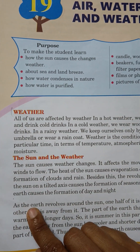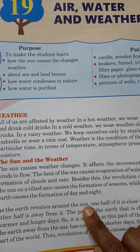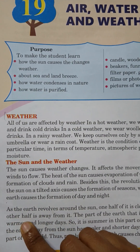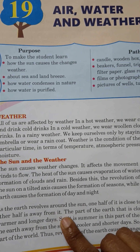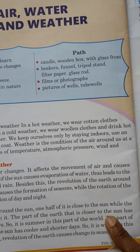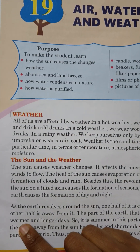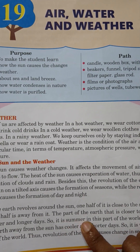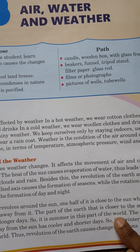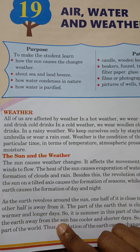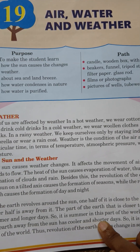As the earth revolves around the sun, one half of it is close to the sun while the other half is away from it. The part of the earth that is closer to the sun has warmer and longer days, so it is summer in this part of the world. The part of the earth away from the sun has cooler and shorter days, so it is winter in this part of the world.